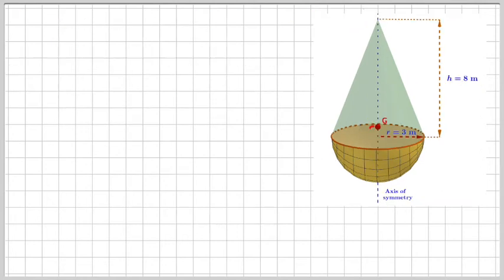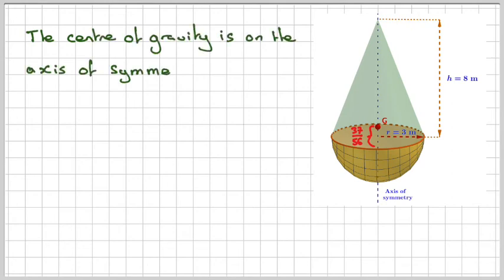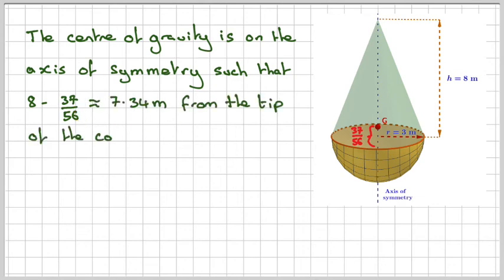So if we now go to a different diagram, that will be of that position which is 37 over 56 meters, but this position can actually change depending on the size of h and r. So we'll try and give the center of gravity from this point up here. So the center of gravity on the axis of symmetry, which is this line here, will be such that 8, because the height is 8, minus what we just found, 37 over 56, which is approximately equal to 7.34 meters from the tip of the cone.